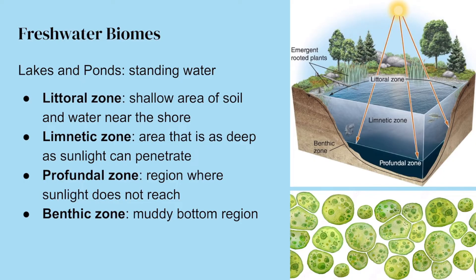Lakes and ponds are another type of freshwater biome. They consist of standing water — no river or stream. There's no clear point at which a pond becomes a lake. Ponds are generally smaller, but similarly to differentiating between streams and rivers, it can be difficult. Generally, lakes are larger bodies of standing water.